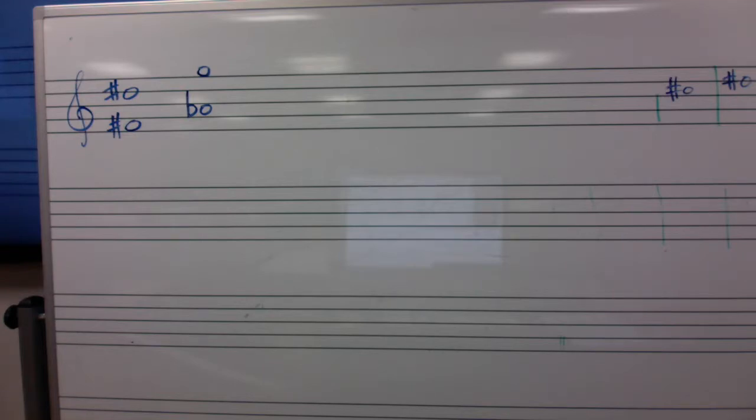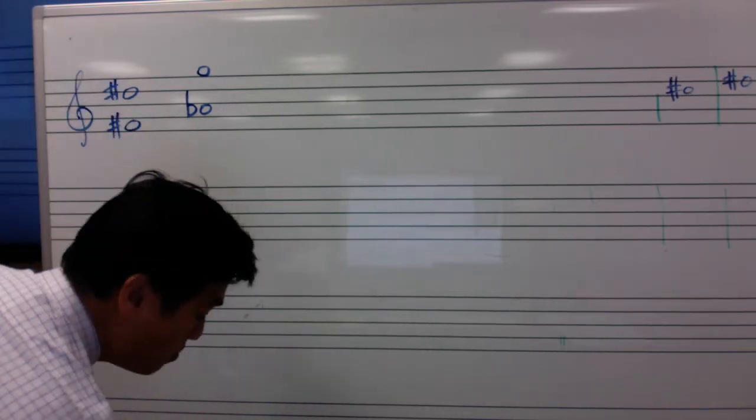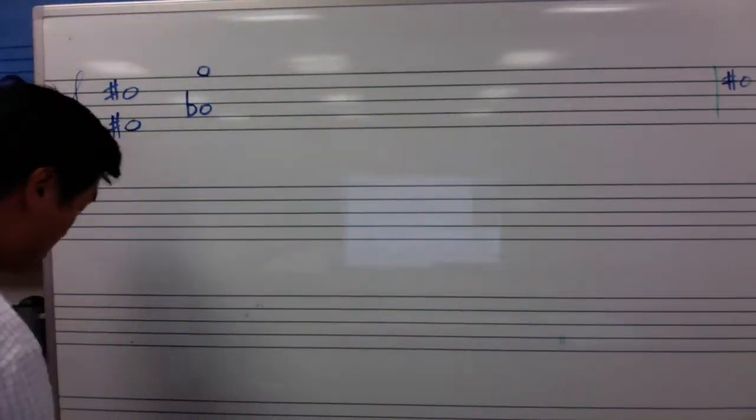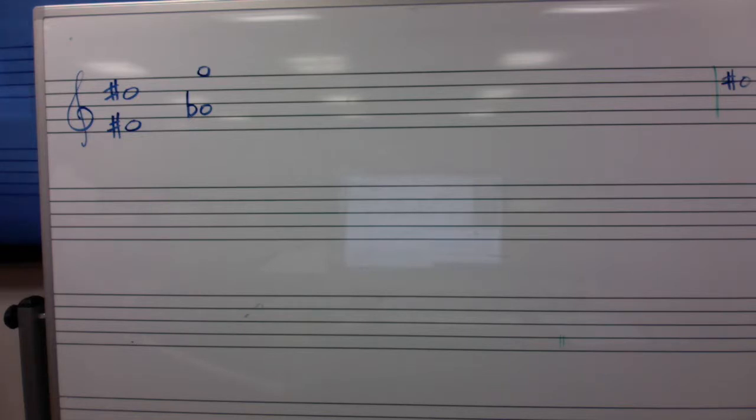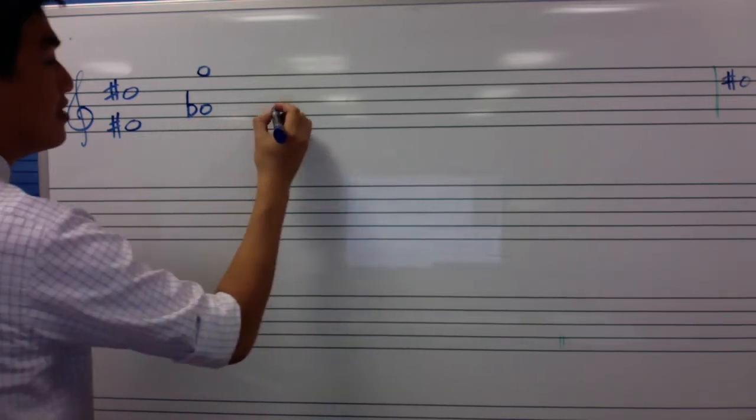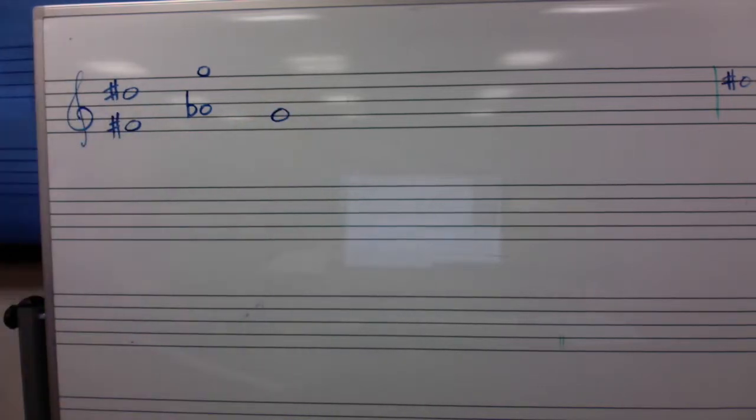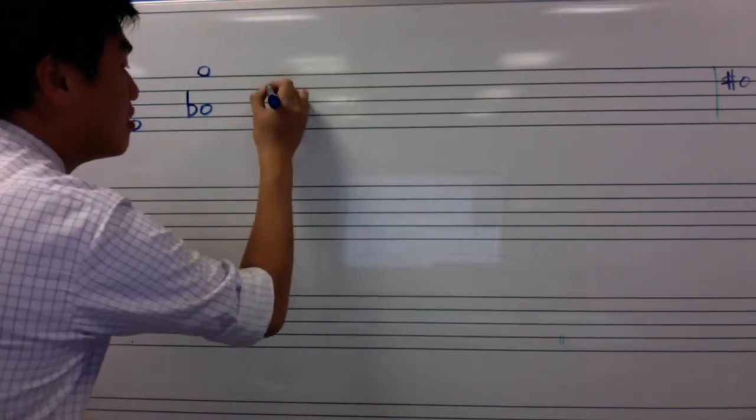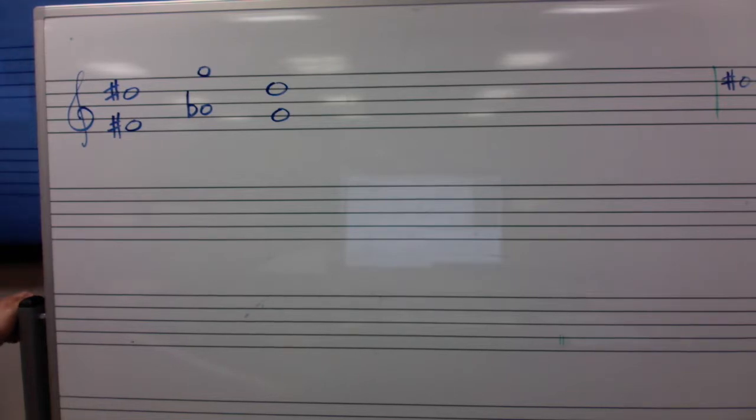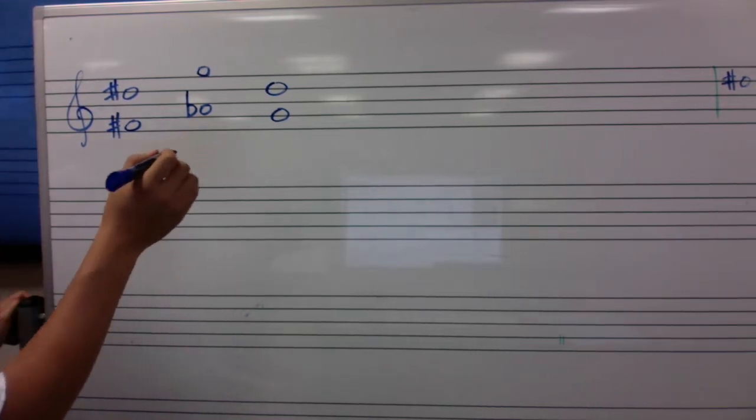Akaija give me two notes. G and... G and what sorry? B. D? Okay. All right Farzana? A-flat and what? E-flat and B-flat.